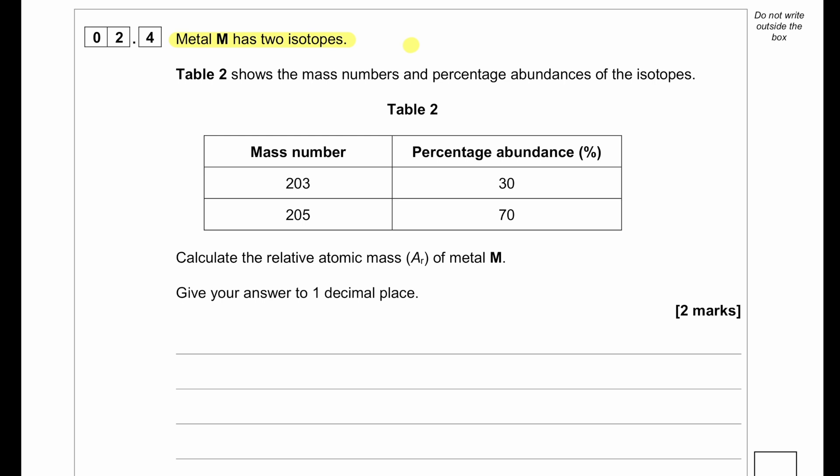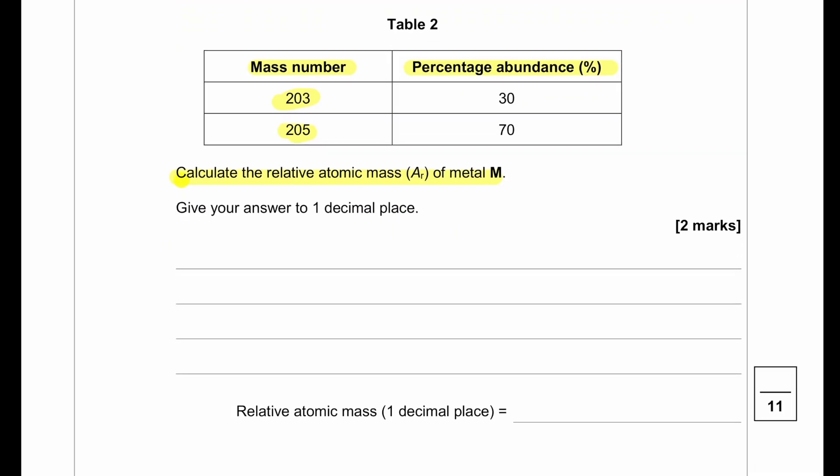Metal M has two isotopes. Table 2 shows the mass number and percentage abundances of the isotopes. Calculate the relative atomic mass AR of metal M. To calculate the relative atomic mass, we are going to multiply the mass number with the percentage abundance, then repeat it for the second mass number. Then we're going to divide the whole thing by 100, which will give us the relative atomic mass. We mention it up to one decimal place, so 24.4 is the answer.